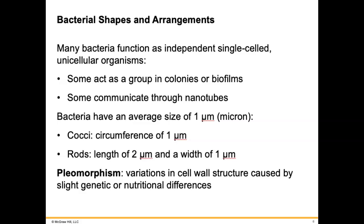Pleomorphism is when there are variations in cell wall structure, caused by slight genetic or nutritional differences. Just like two animals born at the same time where one isn't given the same nutrients as the other — there can be some differences between them. That's the same idea with bacteria.